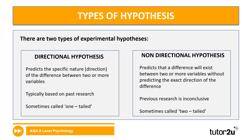To summarise: a directional hypothesis specifies the direction of difference, while a non-directional hypothesis states a difference but doesn't specify its direction. Use a directional hypothesis when there's peer-reviewed research pointing towards one direction. Use a non-directional when research is inconclusive or it's a new area. A directional hypothesis is called one-tailed because we're specifying one outcome, whereas a non-directional is two-tailed because there are two potential outcomes — more than or less than.